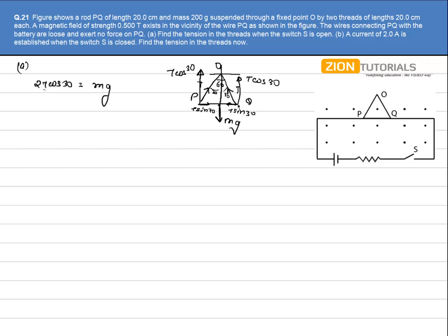I have all the values to substitute: 2T cos 30 is root 3 by 2, mass is 200 grams or 0.2 kg into 9.8. So the tension comes out to be 1.13 N.